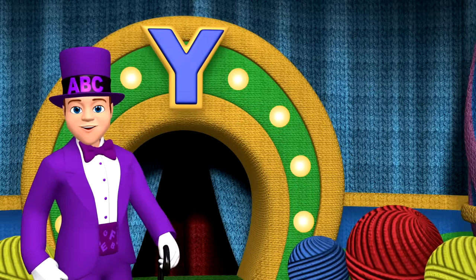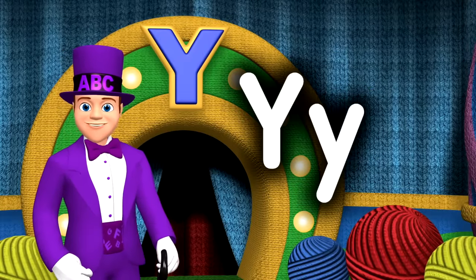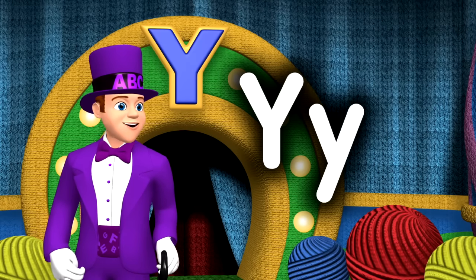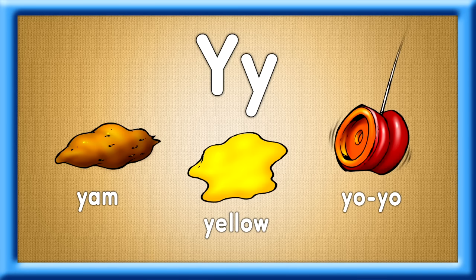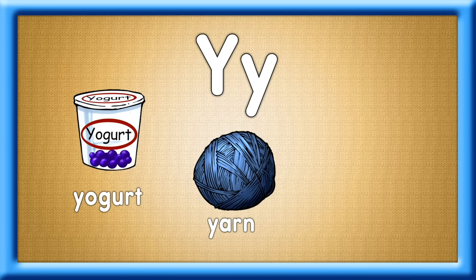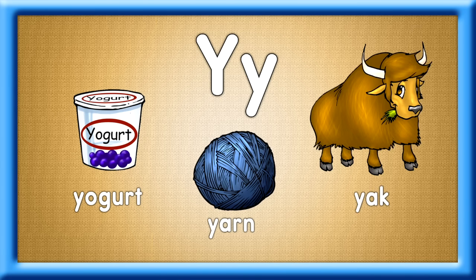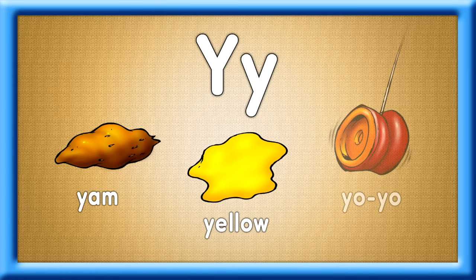Yee-haw! You're doing great! I see a capital Y and the lowercase y. Let's sing Y words — you've got the knack. Yogurt, yarn, and a yak. A few more words for you to know: yam, yellow, and yo-yo. Yogurt, yarn, and a yak. Yam, yellow, and yo-yo.